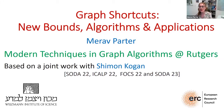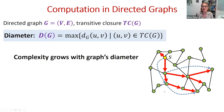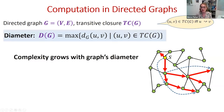Throughout the next one hour and a half, we are going to really focus on directed graphs. An important parameter that we are going to focus on is what we call the diameter, which is measured as the longest U to V shortest path if there exists such a shortest path in the graph. We only consider edges in the transitive closure. Among all of them, we maximize — we look at the maximum shortest path distance from U to V.